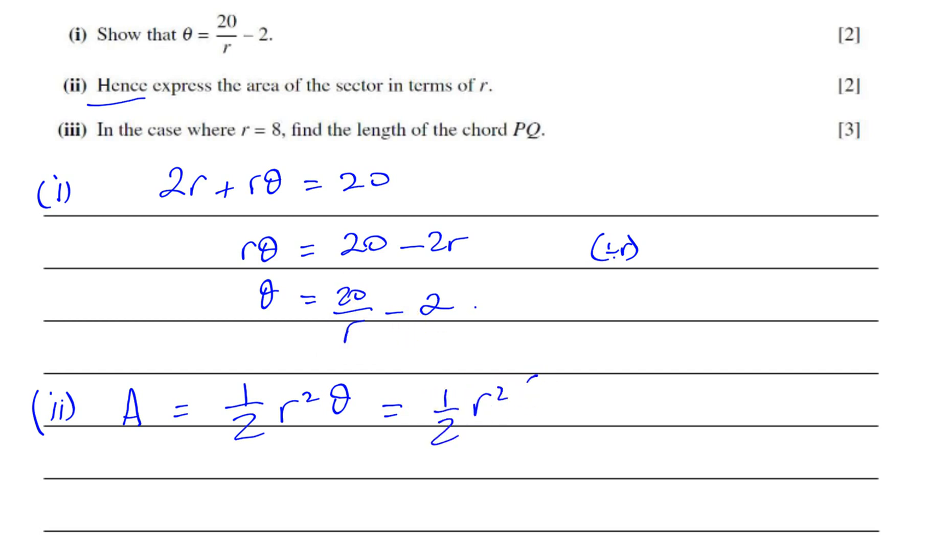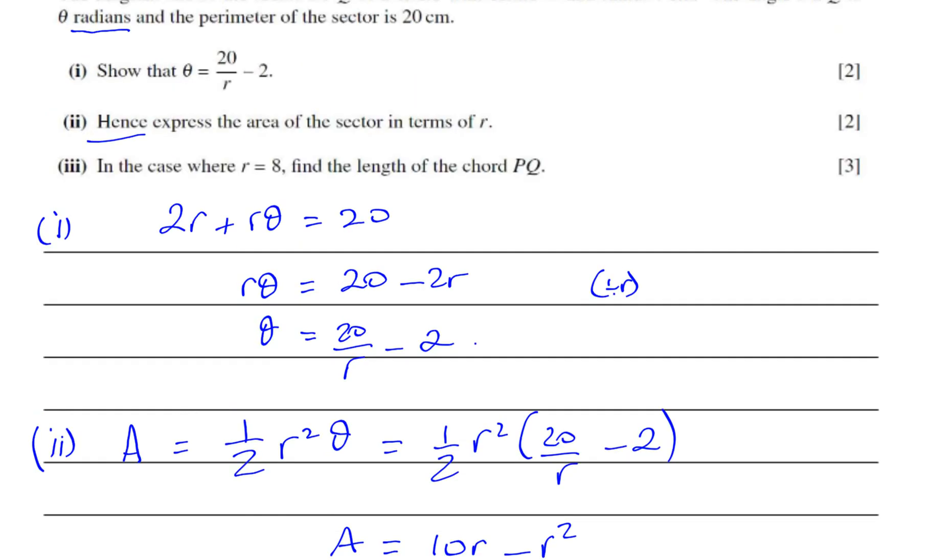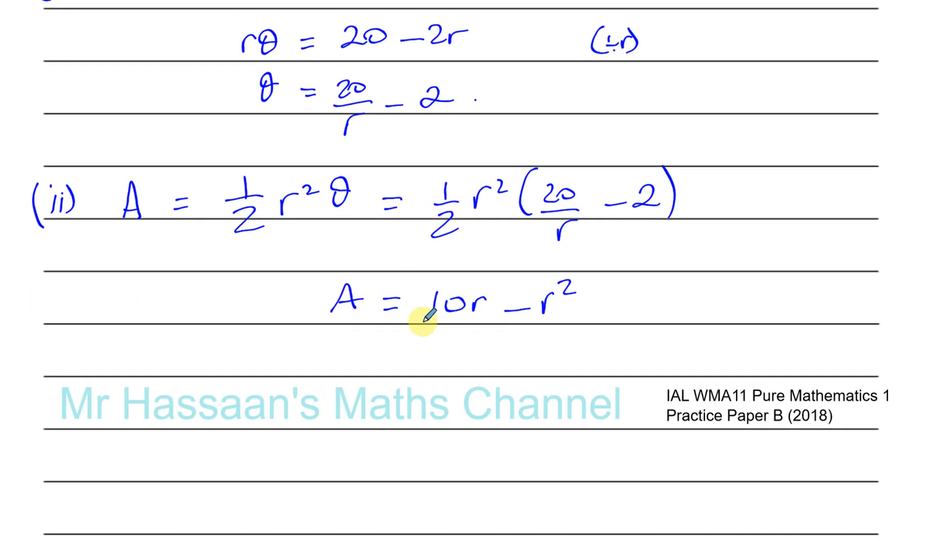So I can replace the theta in this formula by 20 over R minus 2. So you have a half times R squared times 20 divided by R minus 2. And then when I expand this, you have a half R squared times 20. So that will give you 10. The half times 20 is 10, and R squared over R will give you R. And you're going to have a half R squared minus 2. Well, a half times minus 2 is minus 1. So you'll have minus 1 R squared. So the area is equal to 10R minus R squared. That's the area in terms of R. Meaning A equals something R, no theta in there.